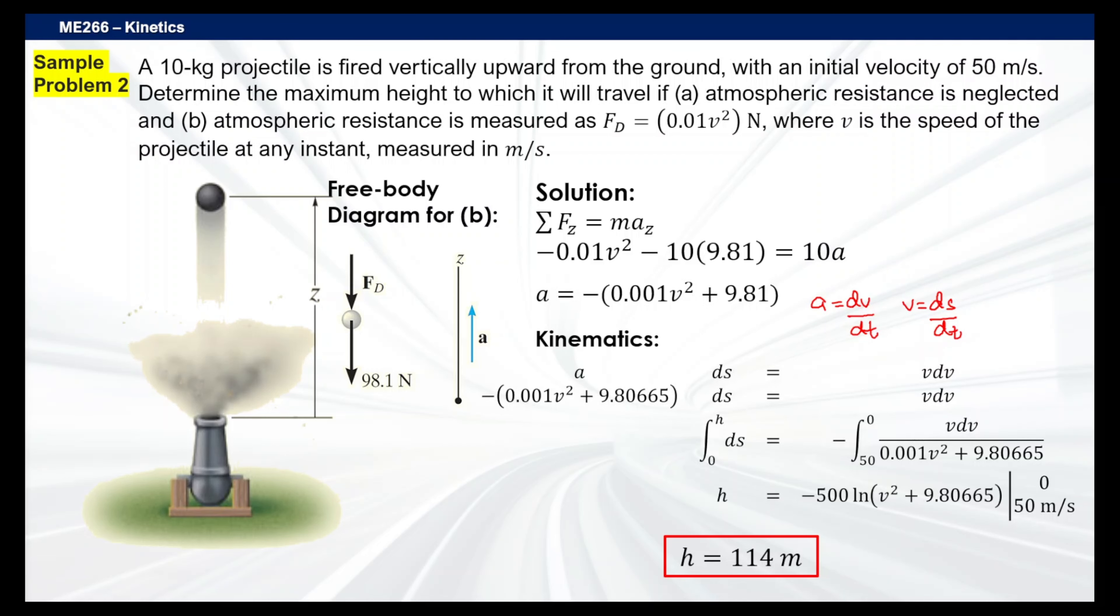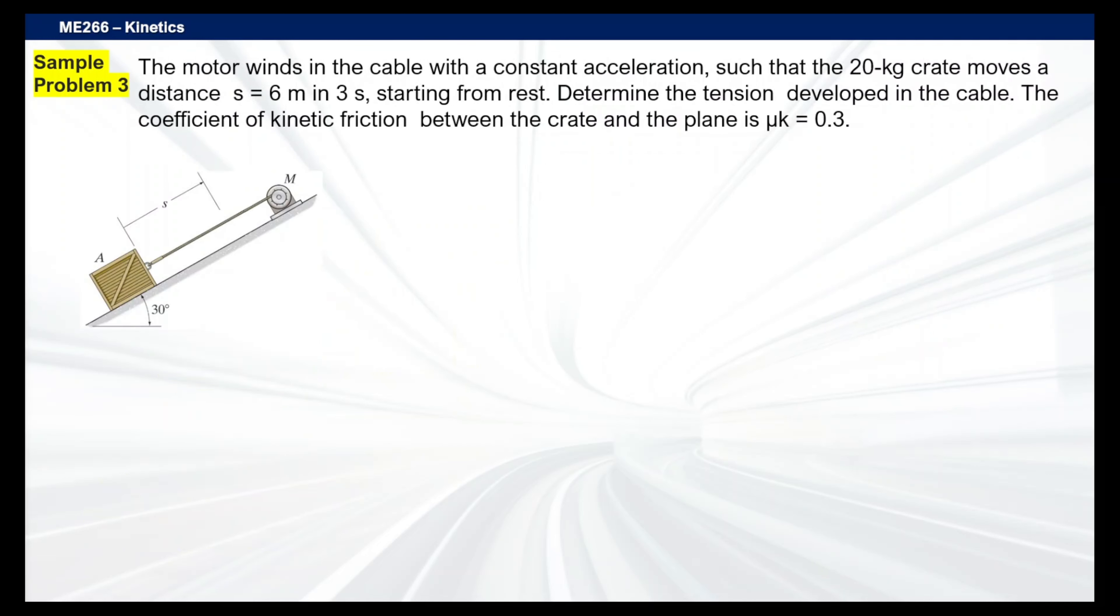Next up is kind of like sample problem one, but the crate now is totally inclined. Now we have here a motor winding the cable with constant acceleration such that the 20 kilogram crate moves a distance S equals 6 meters in just 3 seconds, starting from rest. That should give you some clues already, meaning our initial velocity is zero. Now we're here to determine the tension developed in the cable, so we need the tension T here. The coefficient of kinetic friction between the crate and the plane is 0.3.